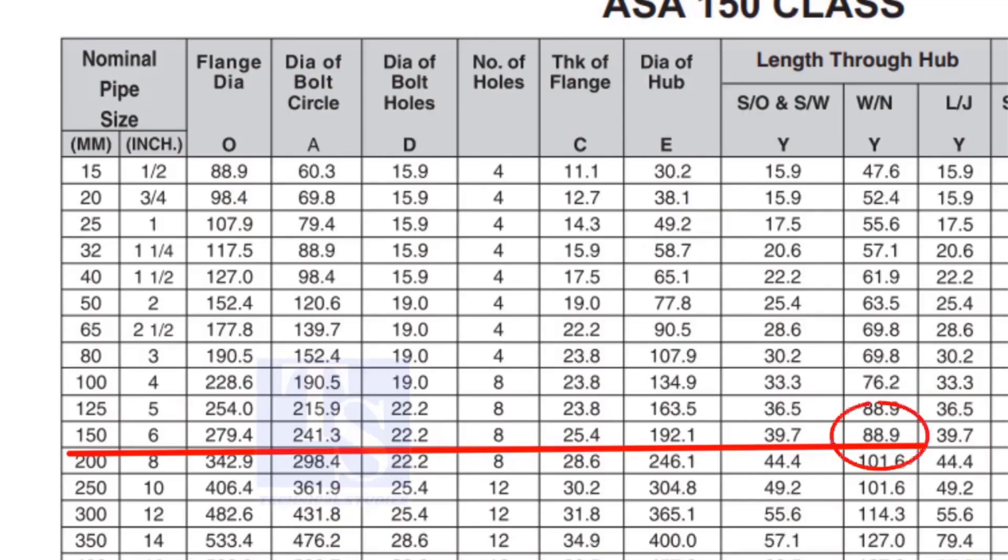Check the height of the flange in the table. Since the pressure rating is 150, the height of the flange is 88.9mm. Note down the height.